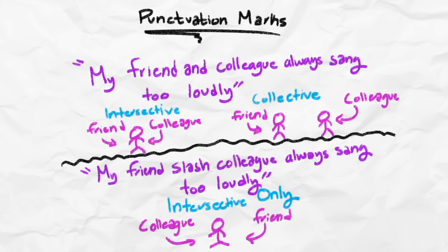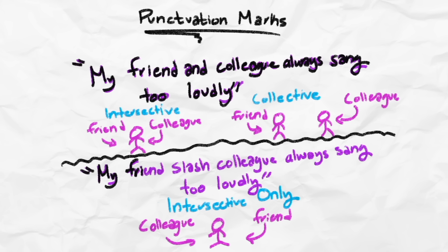This is where the usage of slash becomes extremely useful as it only has the intersective interpretation. With the second sentence, there's no confusion about whether or not I'm talking about one or two people. We know that the friend is also a colleague. As we begin to use slash as an intersective conjunction more and more, we might relegate and to only being used within collective instances.